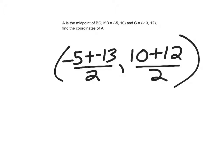Negative 5 plus negative 13, negative 18, divided by 2, I have negative 9, and then 11. So this is the easiest case. You're given the endpoints, and you have to find the midpoint.